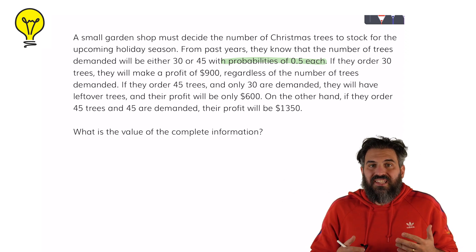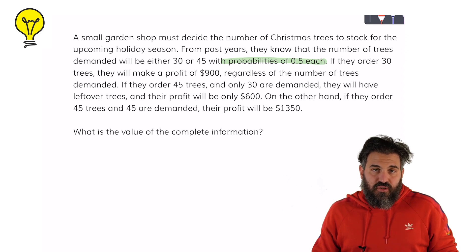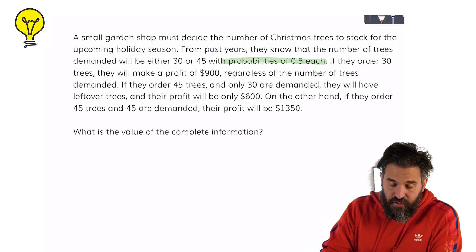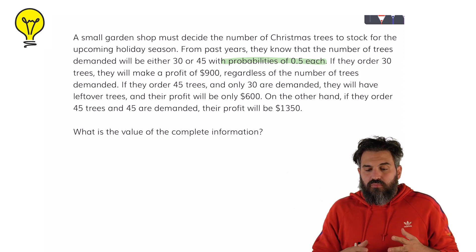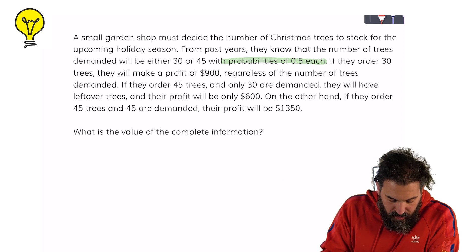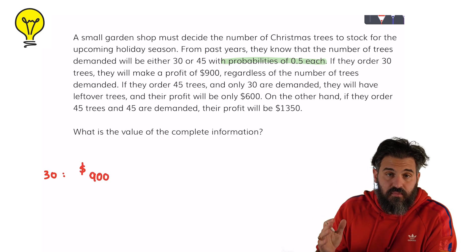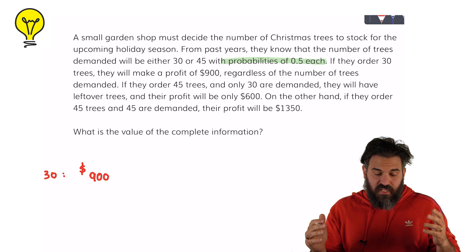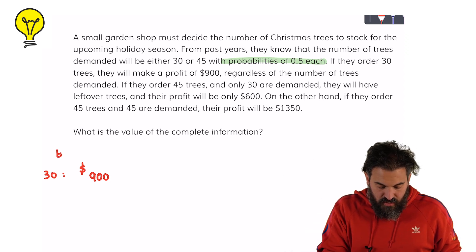Now the big problem is we don't know how much the demand will be — that is the information that we're missing. So to figure out the value of complete information, the first thing you want to figure out is what are the expected returns. If I were to order 30 trees then I'm going to make $900 regardless — so that's certain. I'm going to make $900 of expected return.